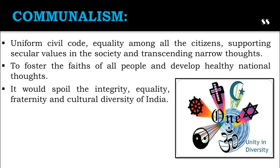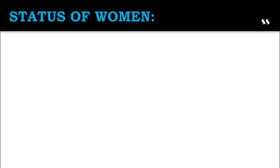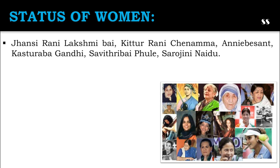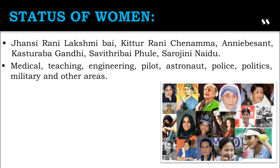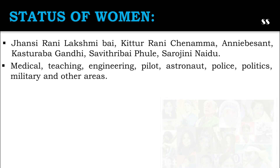Now let's talk about the status of women. The achievements of women during pre-independent India are notable. Jhansi Rani Lakshmi Bai, Kittu Rani Channamma, Annie Besant, Kasturba Gandhi, Savitri Bai Phule and Sarojini Naidu are some of the memorable women freedom fighters. Now women are present in all walks of life like medical, teaching, engineering, pilot, astronaut, police, politics, military and other areas. But still the status of women needs improvement. The status of women has remained low due to social customs, poverty and illiteracy, affecting the progress of the country.